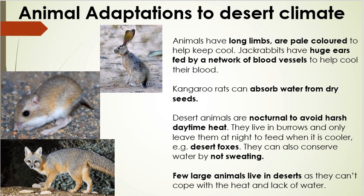Desert animals are also nocturnal to avoid the harsh daytime heat, meaning they only come out at night-time and live in burrows during the day. The desert fox is an example of a nocturnal animal. The desert fox can also conserve water by not sweating — it doesn't have the same sweat pores as a human, so it retains a lot of water.